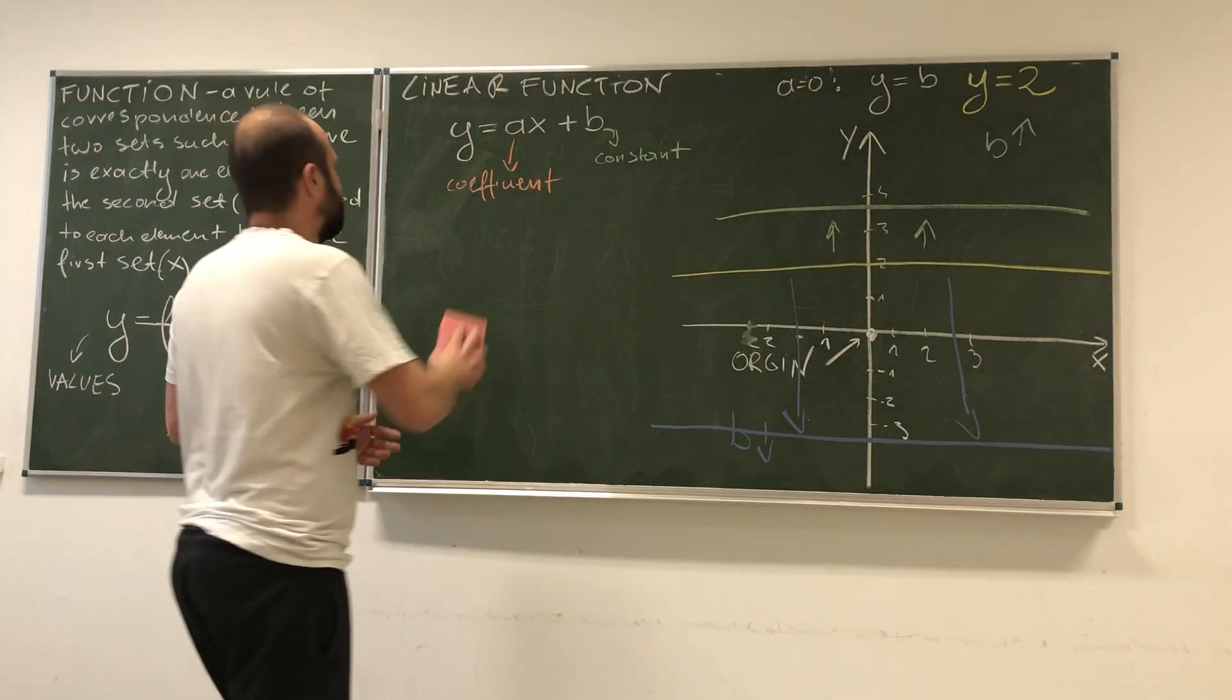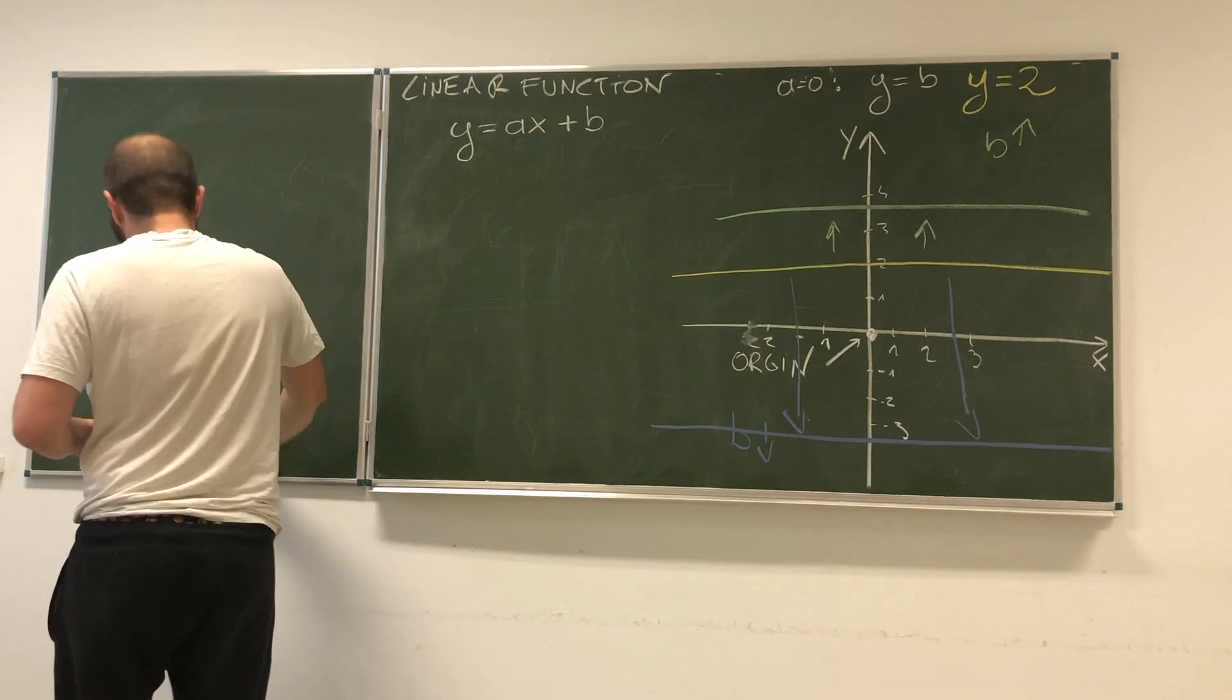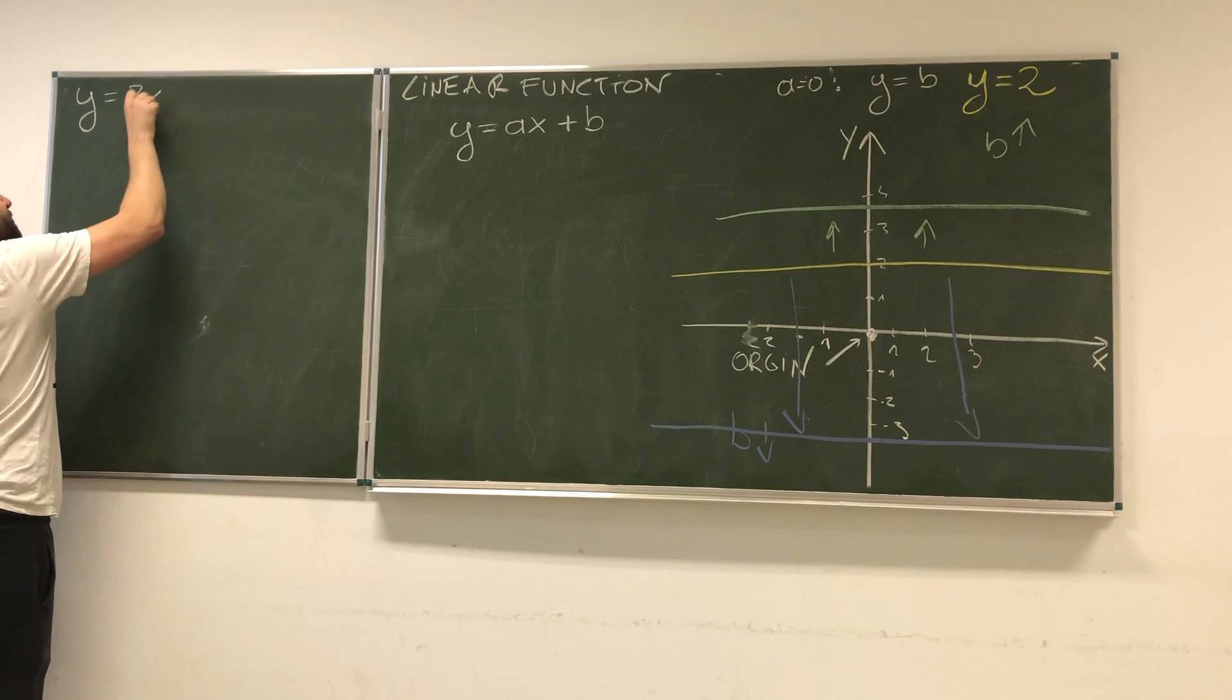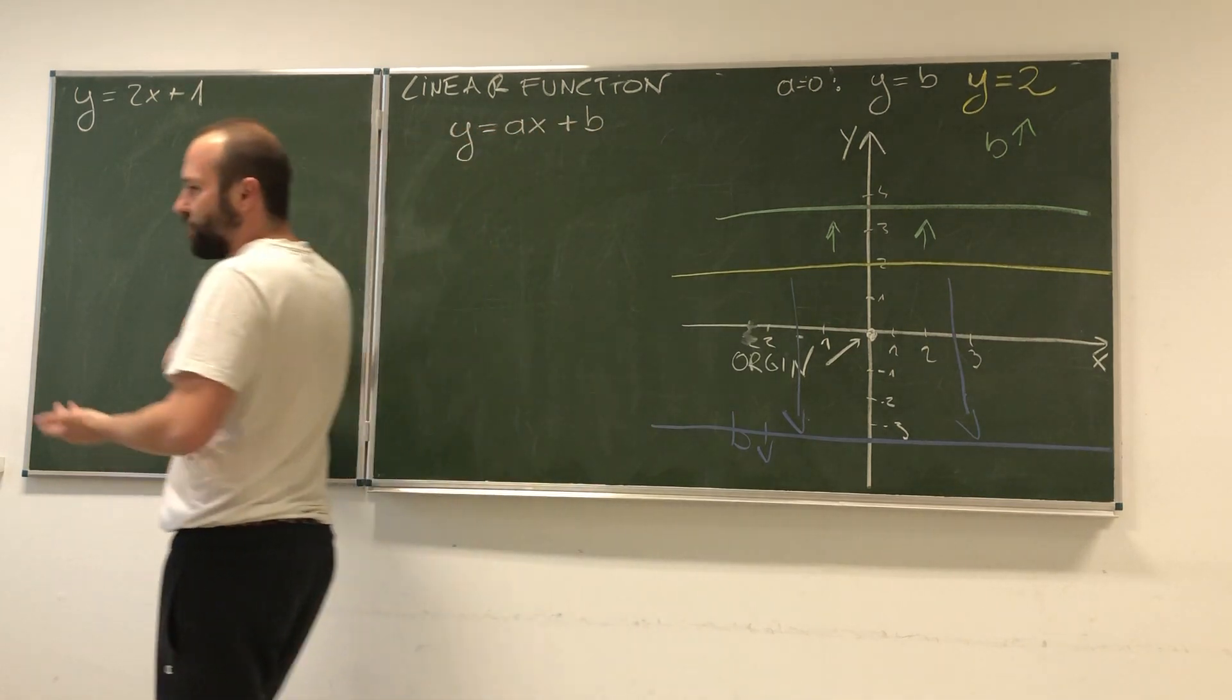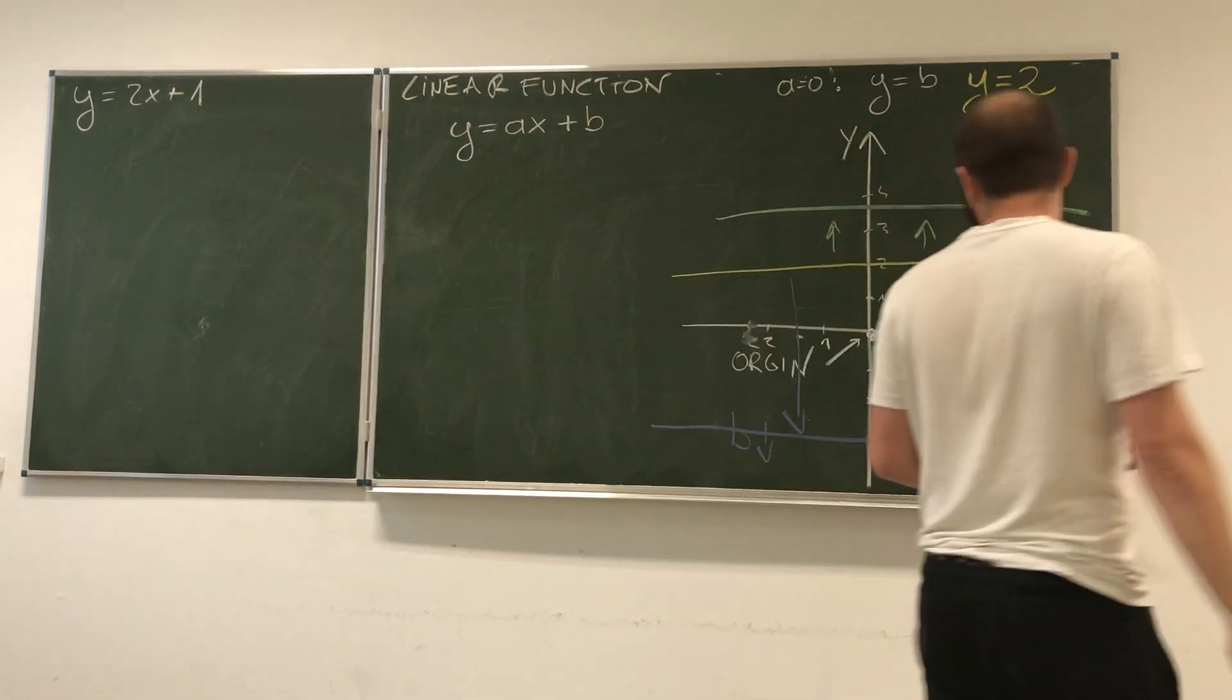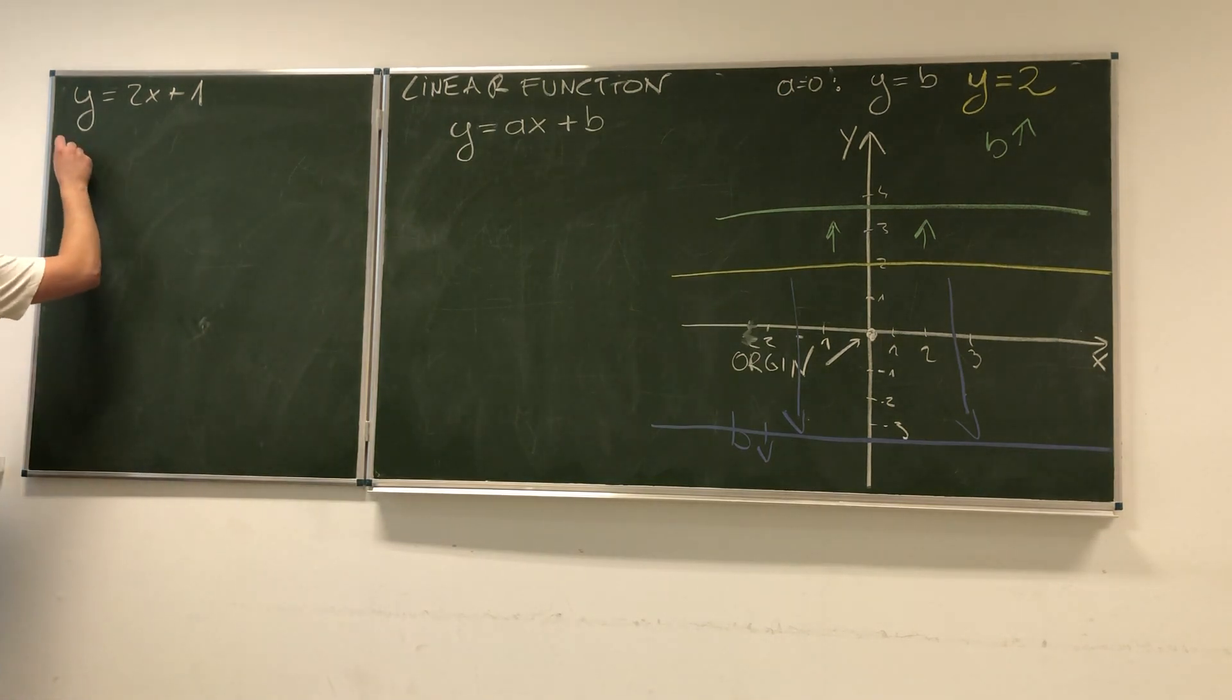Let's see what happens if a is no longer equal to zero. Let's start with a simple example: y equals 2x plus 1. As the name suggests, linear function will always give us a straight line. To draw it, we need to know two points. The points most interesting to us are where the function cuts through either horizontal or vertical axis.